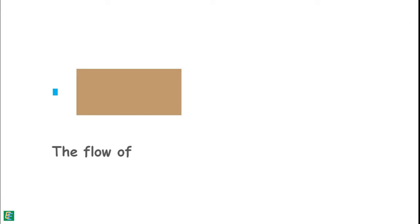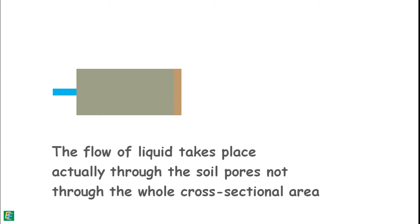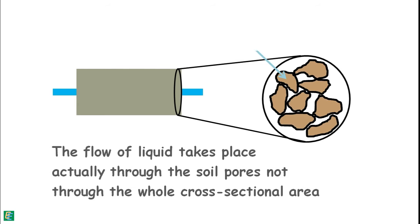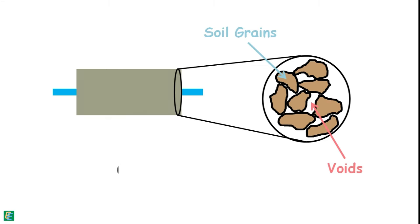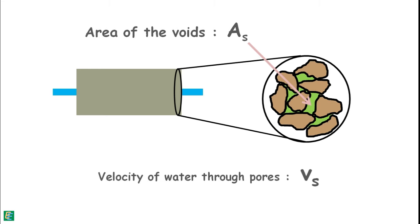The flow of liquid takes place actually through the soil pores, not through the whole cross-sectional area, because primarily this cross-sectional area is composed of soil solids and very less area is available for the voids. But for the calculations, we have considered the whole soil area. So, let's say average area of the voids is As and the flow of water in the soil pores has velocity Vs.